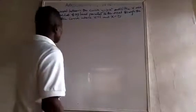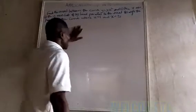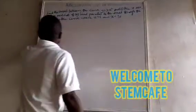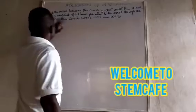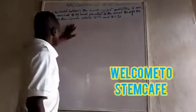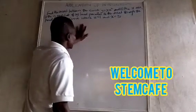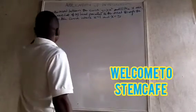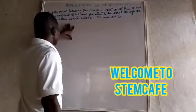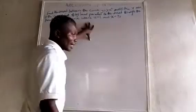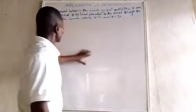Find the area between the curves y equals 2x squared and the x-axis, cut off by lines parallel to the axis through the points on the curve. They are x equals 1 and x equals 3.